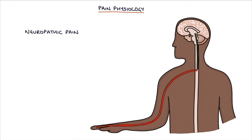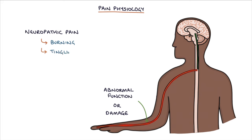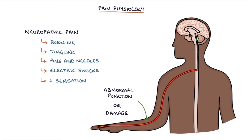Neuropathic pain is caused by abnormal functioning or damage to the sensory nerves, resulting in pain signals being transmitted to the brain. Typical features suggestive of neuropathic pain are burning, tingling, pins and needles, electric shocks, and a loss of sensation to stimulation of the affected area.